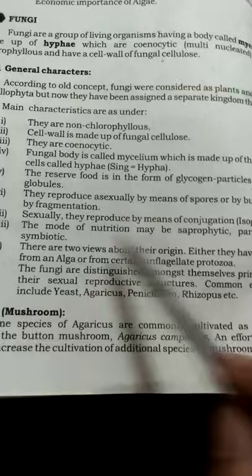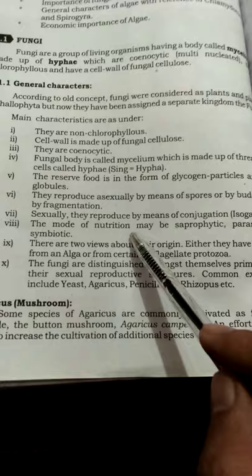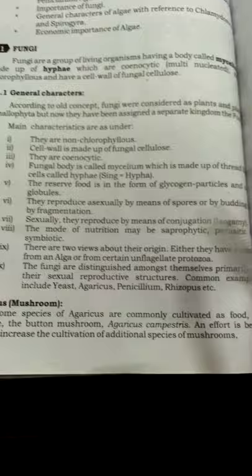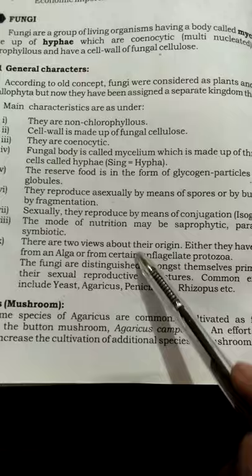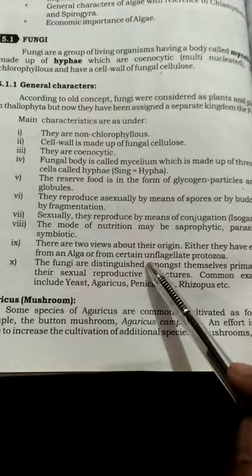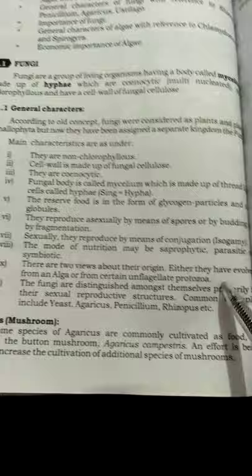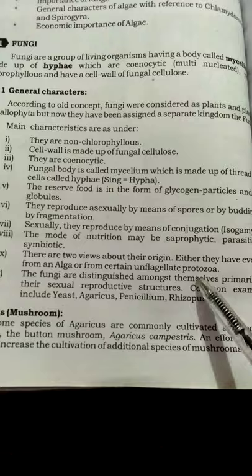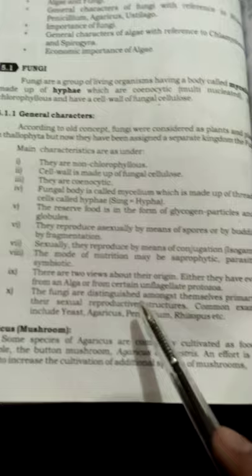The mode of nutrition in fungi may be saprophytic, parasitic, or symbiotic — all heterotrophic, because fungi cannot make their own food autotrophically and must obtain food from others. There are two views about their origin: either they evolved from algae, or from certain unflagellate protozoa. Fungi are distinguished amongst themselves primarily by their sexual reproductive structures.